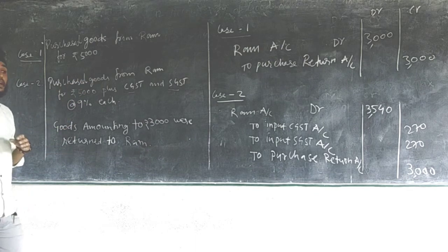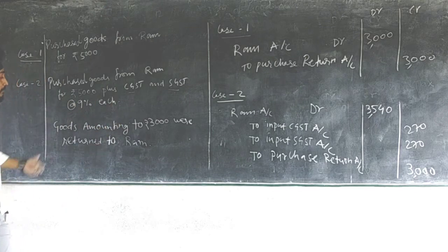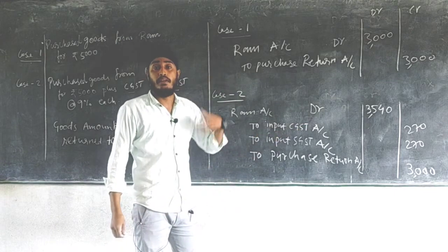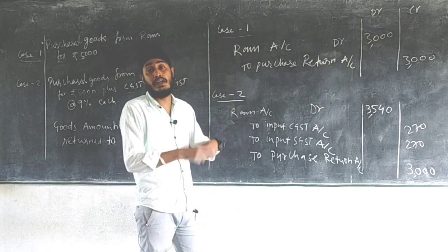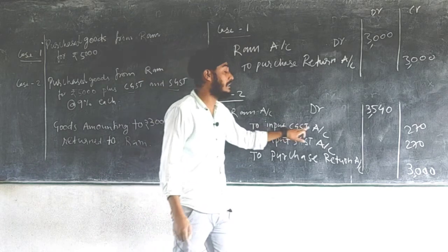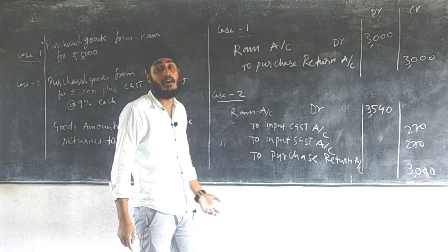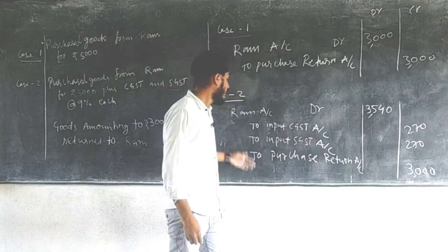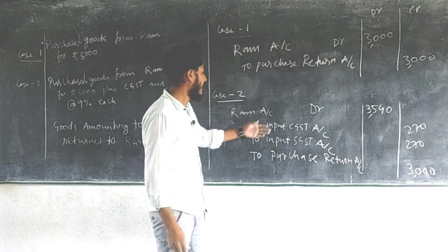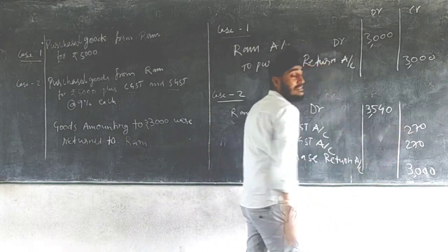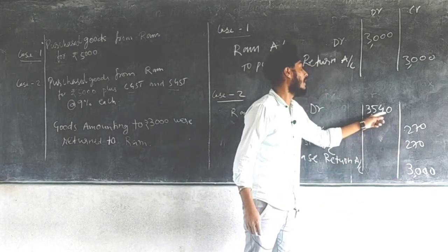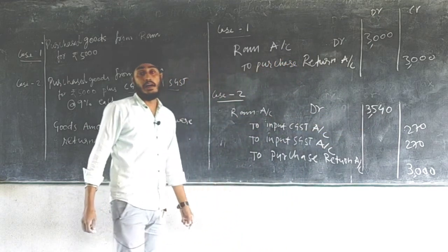When returning goods with GST, we do the reverse entry of what was done during purchase. In purchase, Input CGST and Input SGST were debited; on return, they are credited. The journal entry is: Ram Account debit, to Input CGST Account, to Input SGST Account, to Purchase Return Account. Input CGST = 270, Input SGST = 270, Purchase Return = 3000; total on Ram Account = 3540.